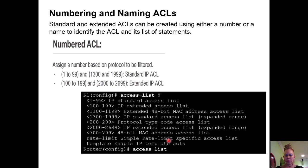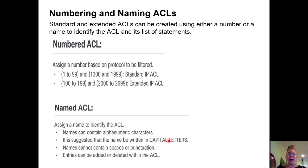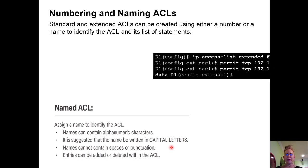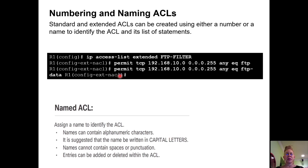I could also do a named access control list. I prefer named access control lists because, to me, it gives a little bit of a description of what that ACL is doing. For example, I could name it 'IP access list extended deny traffic.' Here is what an extended named access control list looks like: I'm telling it I'm creating an IP access list, it's going to be extended, and here's the name — 'FTP filter.' And what is this doing? It's permitting TCP traffic to the port for FTP.